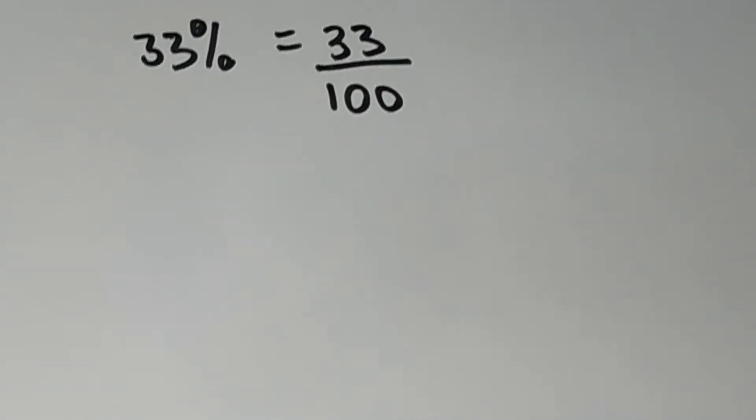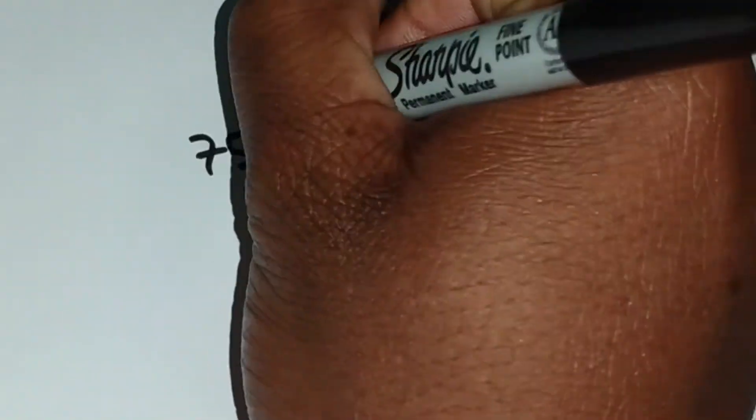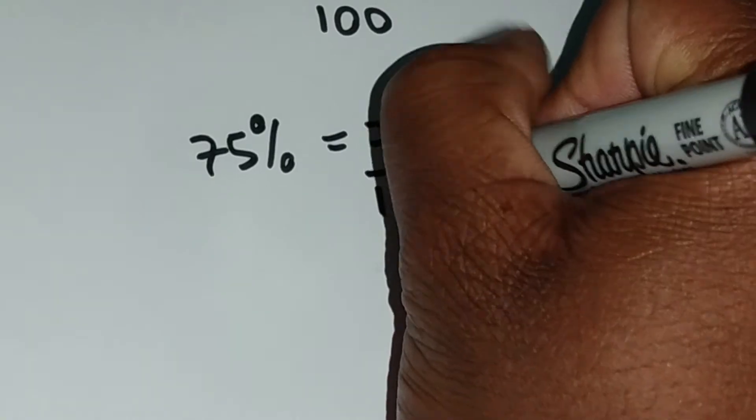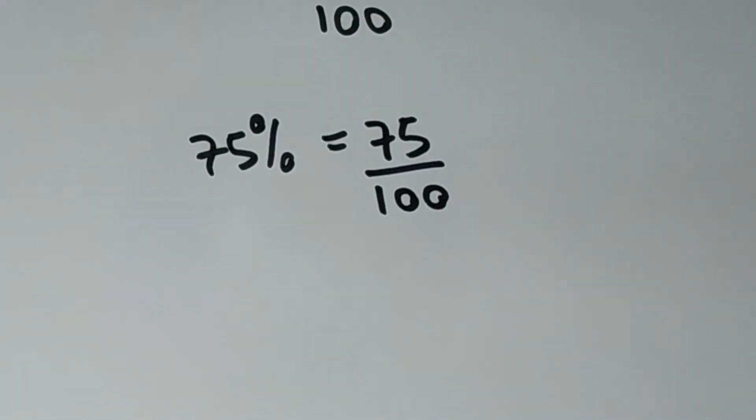And now let us look at another example. What if we had 75%. Now we can represent 75% as a fraction by simply putting the 75 again over 100. And if possible, we can always reduce the fraction.